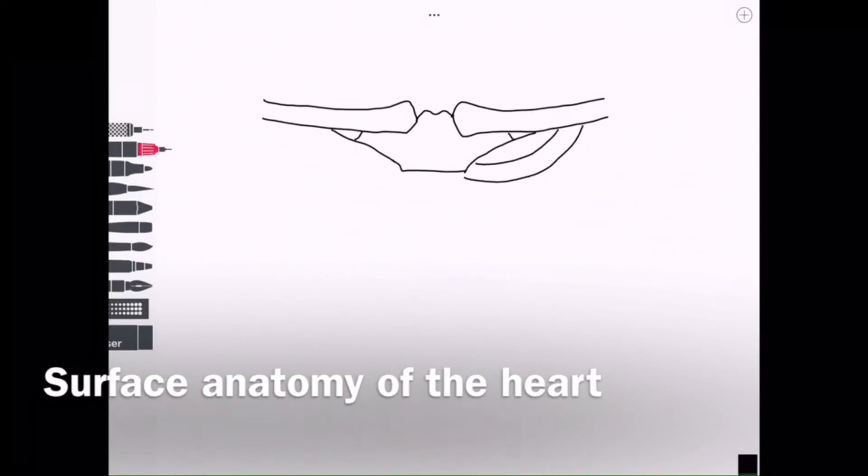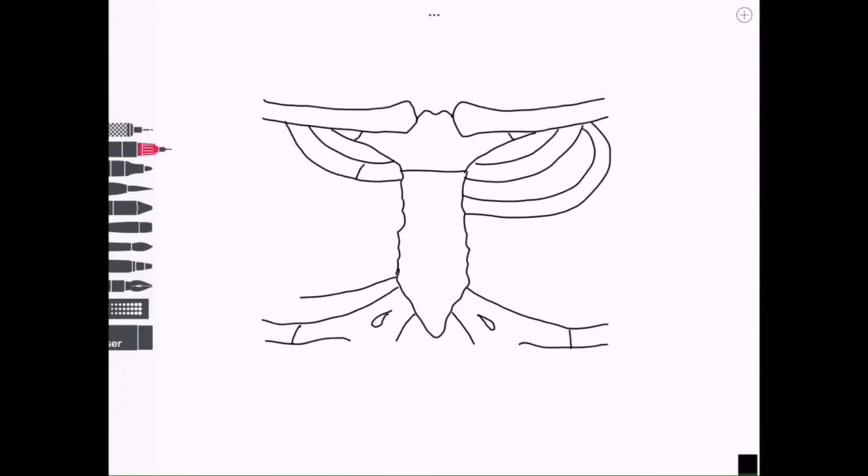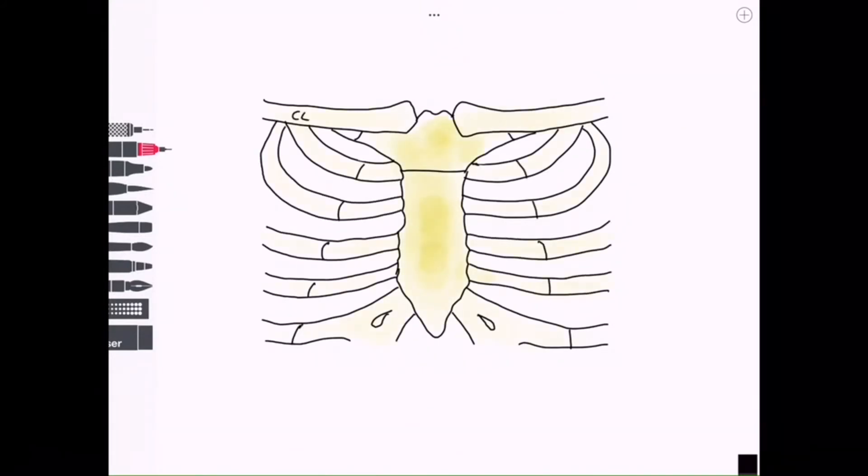Hello and welcome to this video on the surface anatomy of the heart. We're going to kick things off by mapping on the skeletal elements of the thoracic wall, starting off with the clavicle superiorly and numbering the true ribs one to seven sequentially down.